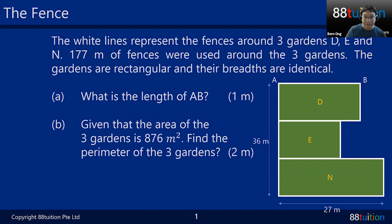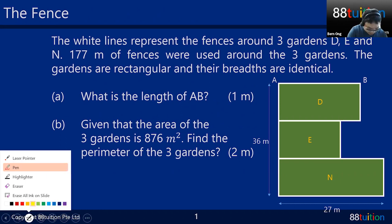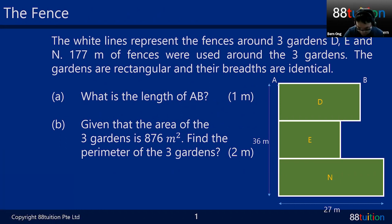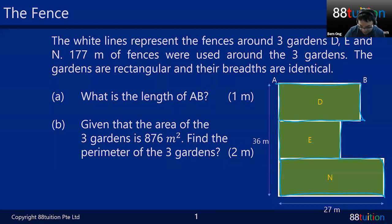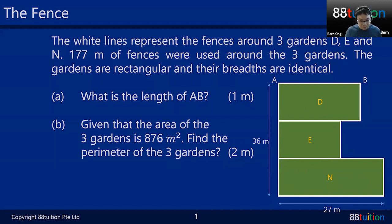177 meters of fence will be used around the tree garden. The white portion — this plus this plus this plus this, all of these combined — makes up a total of 177 meters of fence around it.